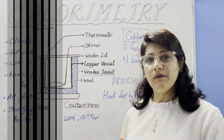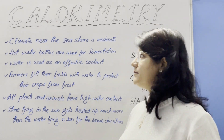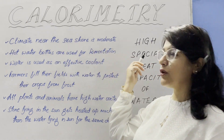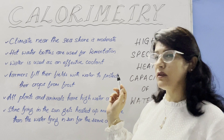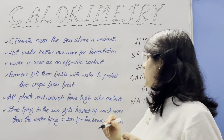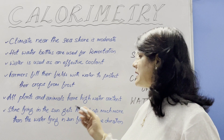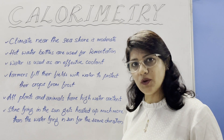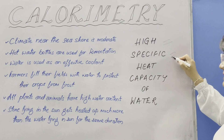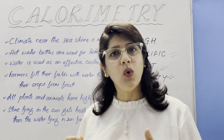This is the principle of calorimetry. Natural phenomena and consequences related to the high specific heat capacity of water include: climate near the seashore is moderate; hot water bottles are used for fermentation; water is used as an effective coolant in radiators; farmers fill their fields with water to protect crops from frost in winter; all plants and animals have high water content; and stones lying in the sun get heated up much more than water for the same duration. All these are explained by water having a high specific heat capacity.